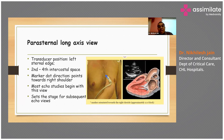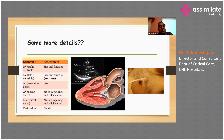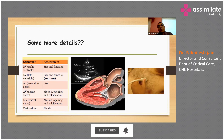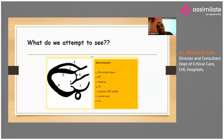In the parasternal long axis view, we are looking at right ventricle size and function, left ventricle size and function, ascending aorta size, aortic valve and mitral valve for calcification, pericardium, and whether the patient has any pericardial effusion. If we label the structures clearly: first is the pericardial space, second is RV, third is the septum, fourth is the left ventricle, fifth is the anterior mitral valve leaflet, sixth is the aortic valve, and seventh is the left atrium.